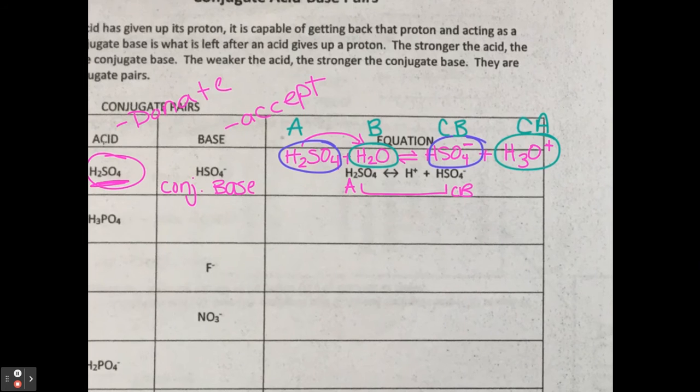We're going to do it with two other ones, and then we're going to skip the equation for the rest of the things, all right? Because I need you guys to be able to, I give you something and tell you that it's a Bronsted-Lowry acid, what is its conjugate base? If something is a Bronsted-Lowry base, what is its conjugate acid? And you need to be able to do that.